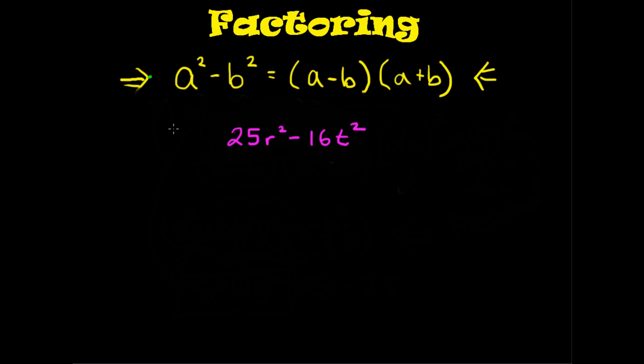In this next problem, notice that there's two different variables being used, but that's really not going to stop us from doing anything. We're going to carry out everything we did in the prior problem in the same exact manner. You notice the 25 is a perfect square, r is a perfect square, 16 is a perfect square, and t squared is a perfect square.